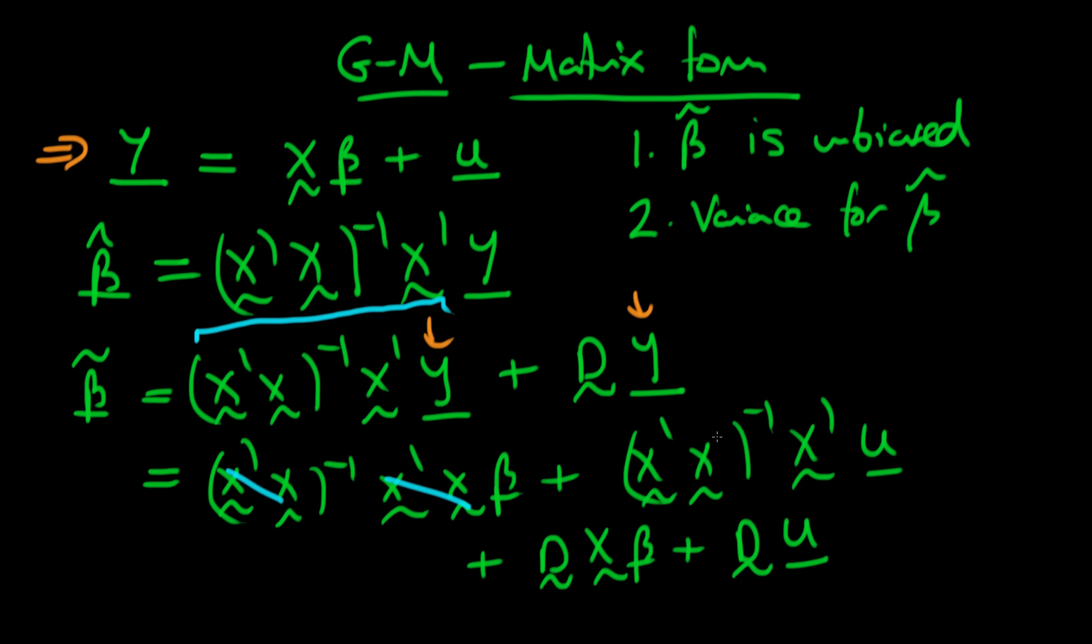When I take expectations of beta, if I write the expectation of beta tilde, because I've assumed that we've got zero conditional mean of errors, my expectations operator passes through this stuff and I just get left the expectation of u which is zero. So this term disappears.